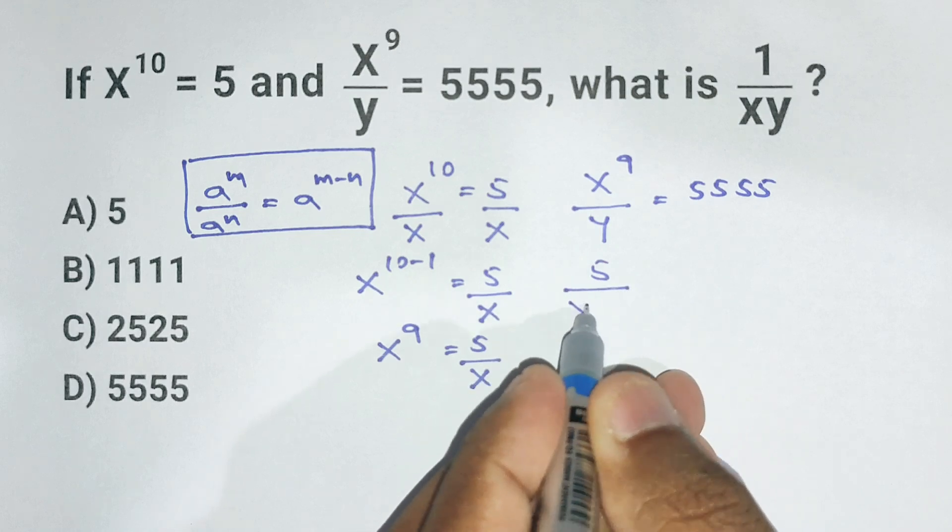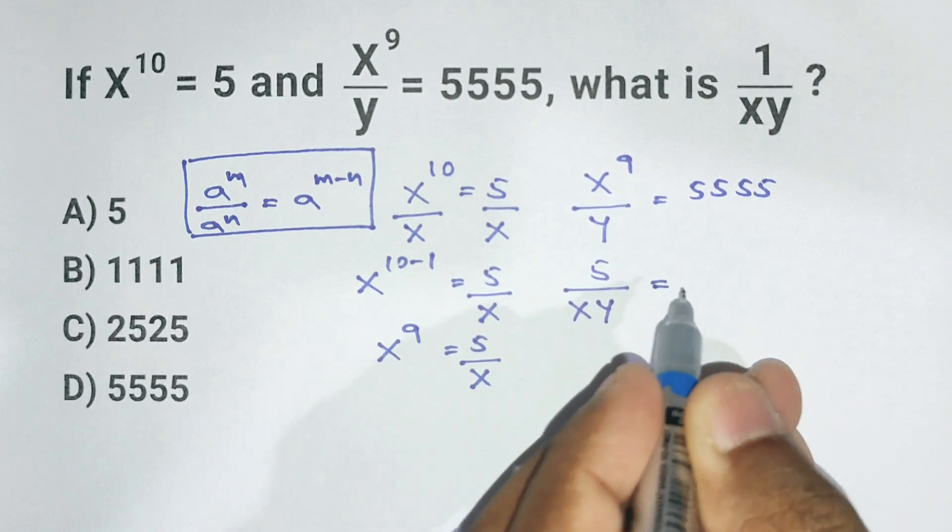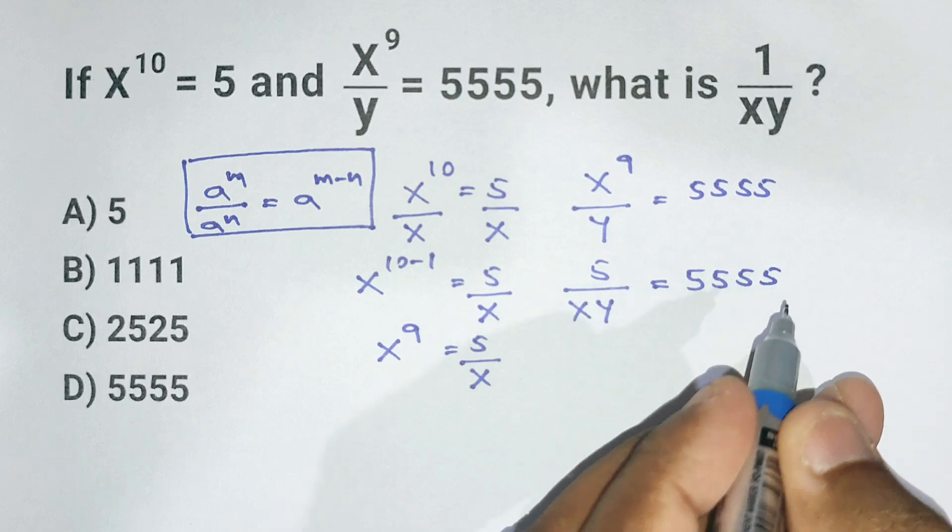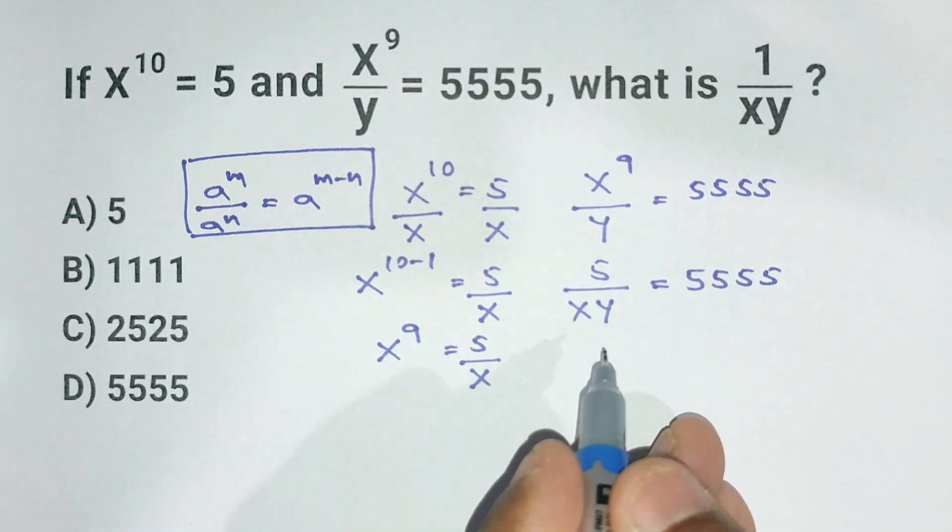That gives us 5 divided by x times y equals 5555. Now here's the move: let's divide both sides by 5.